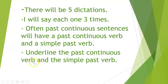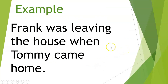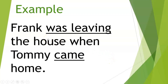Here is an example. If I say: 'Frank was leaving the house when Tommy came home.' Frank was leaving the house when Tommy came home. When we look at this, the past continuous is going to be 'was leaving' — there is going to be a verb with an -ing on it. This is the past continuous form.